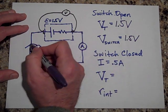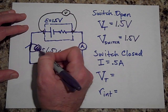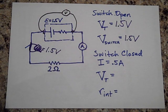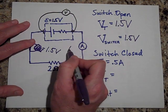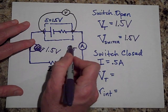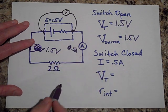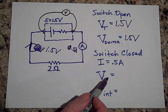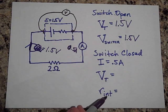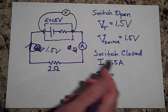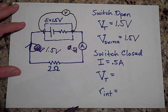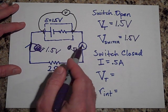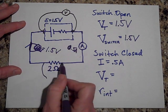Now close the switch. If the current is a half of an amp through here, go ahead and figure out what the terminal voltage is and what the internal resistance must be. If there's a half of an amp, that means there's a one-volt drop across the 2-ohm resistor.